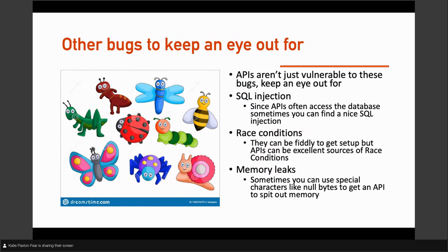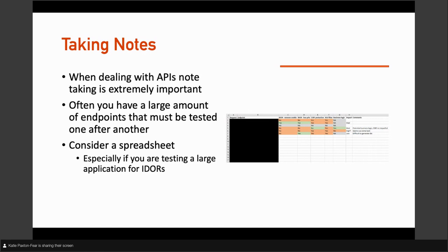Other bugs to keep an eye out for: SQL injection — classic injection vulnerability, very common, though less so if people use frameworks. Race conditions — a classic from the API security top 10, where lack of rate limiting can cause race conditions. They can be a bit fiddly to set up and get actually working, but still an excellent source of vulnerabilities. Memory leaks are quite common as well. So we're not just talking about traditional web application security vulnerabilities — we can think about things in a much wider range. When you deal with APIs, note-taking is really, really important because you often have large amounts of endpoints to test one after another. I have a spreadsheet where I just say yes or no: did it work, was it vulnerable, and some comments on it.